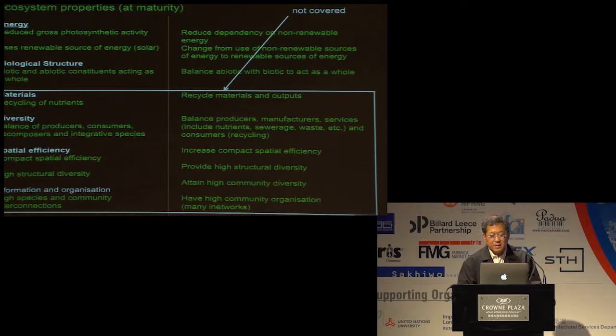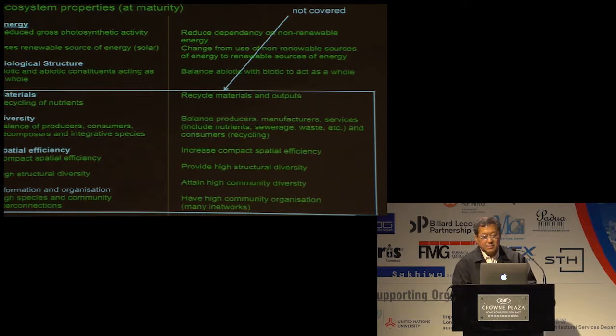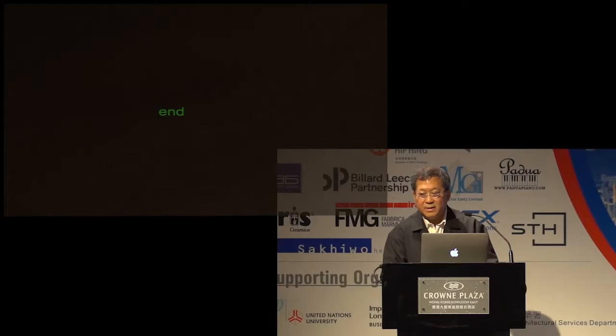Part of our work is what we call biomimicry — imitating the properties of the ecosystems. This table is my life's agenda: trying to find ways in which you can imitate nature so that we have a greater level of biointegration. Today I've just covered some of the factors you can see on top, and the ones I've not covered are at the bottom. Thank you very much.